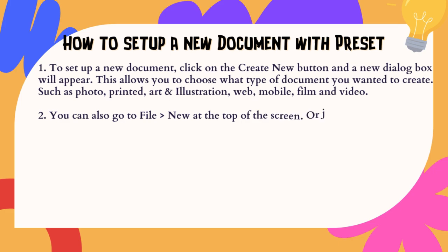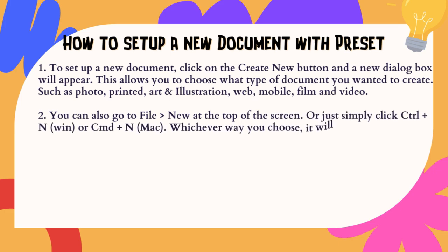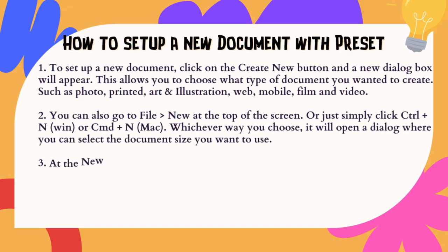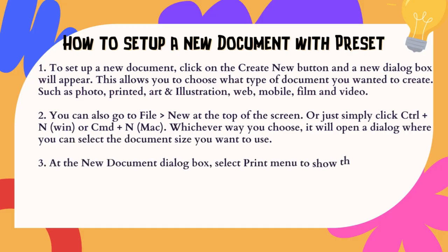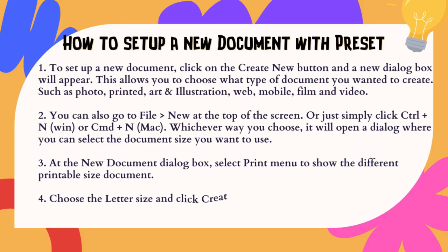2. You can also go to File > New at the top of the screen, or simply click Control+N on Windows or CMD+N on Mac. Whichever way you choose, it will open a dialog where you can select the document size you want to use. 3. At the New Document dialog box, select Print Menu to show the different printable size documents. 4. Choose the letter size and click Create.